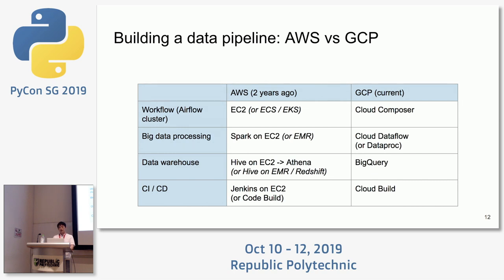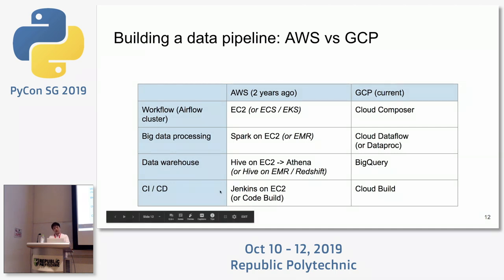Now I will talk about some data engineering services we use on AWS and GCP. We started using AWS almost two years ago. At that time our policy was to try not to depend on any specific cloud service, which is one reason we chose Airflow — it's open source. We built the Airflow cluster on EC2, built a Spark cluster on EC2 for big data processing, and built Hive as a data warehouse also on EC2. For our CI/CD pipeline, we used Jenkins also on EC2.